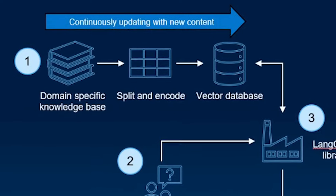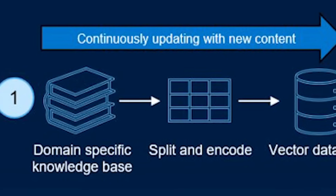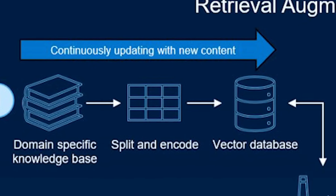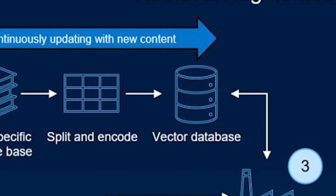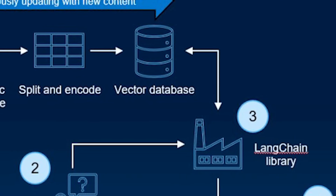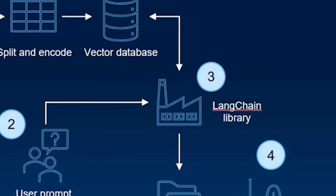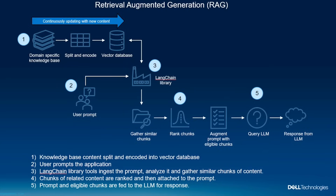We take our domain-specific, potentially private information and put it through a split-and-encode process to put it into a vector database. Then we have this library in the middle called LangChain, which is used to combine information from that vector database and pull information out based on our user input prompting. Then we feed this collection of augmented data out to the large language model to get a response.